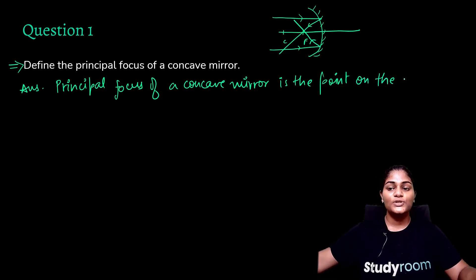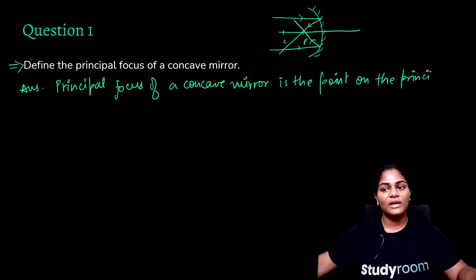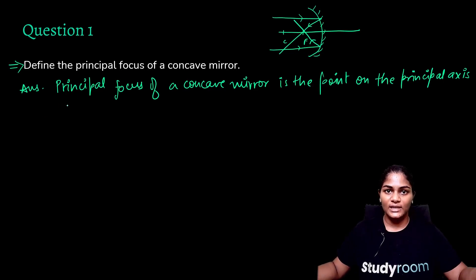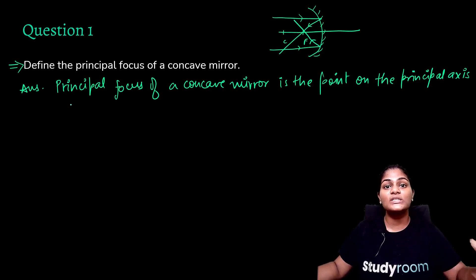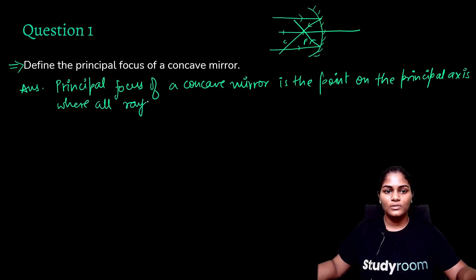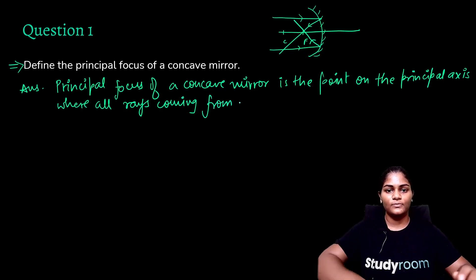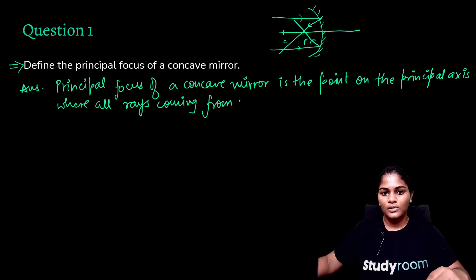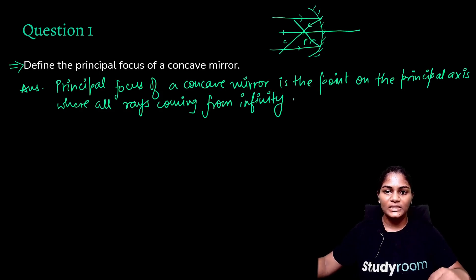These are things to keep in mind: as many scientific and factual details you can include in your definition, the better and more technically sound it will sound. So on the principal axis, where all rays coming from infinity — what happens? They meet, or the word we should use: converge.